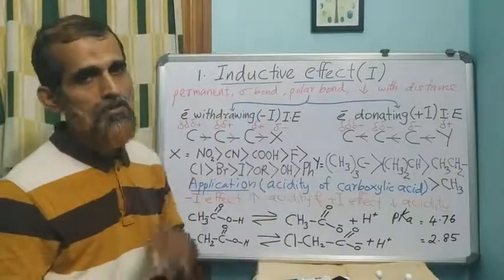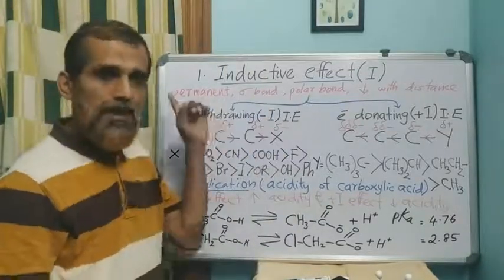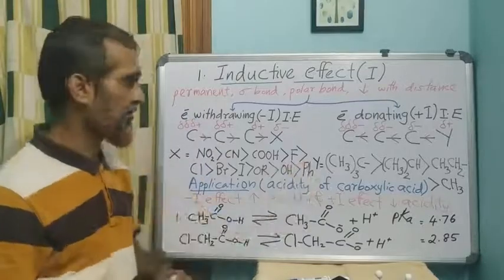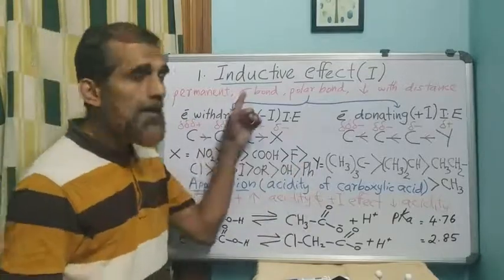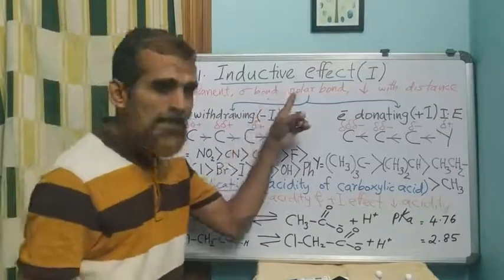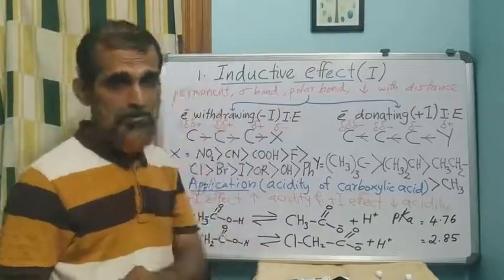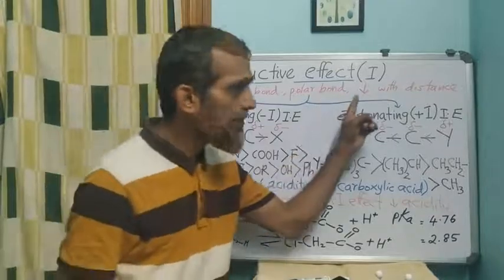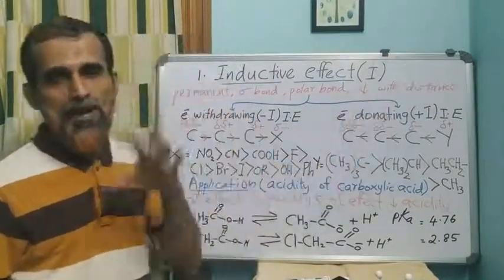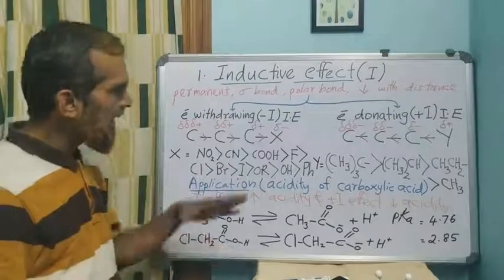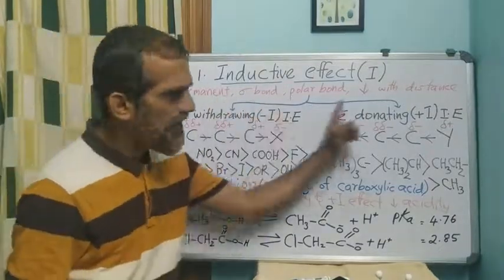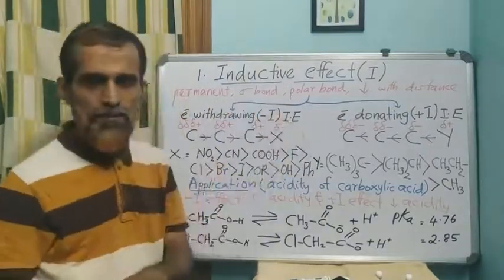There are four points to note about the inductive effect: one, it is a permanent effect always present in the molecule; two, it operates only through sigma bonds; three, it requires the presence of a polar bond; and four, its magnitude decreases with distance — we neglect it after two bonds.